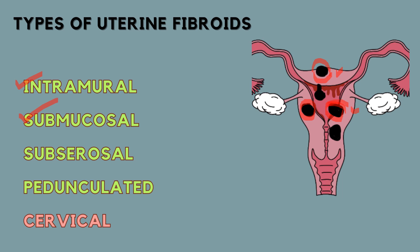The submucosal fibroid is one that projects inside the uterine cavity, beneath the mucosal layer — the innermost layer of the uterus — hence the name submucosal. Submucosal fibroids grow in the inner lining of the uterus and are the most troublesome, most notorious type, as they are mostly responsible for causing heavy menstrual bleeding and other related symptoms.